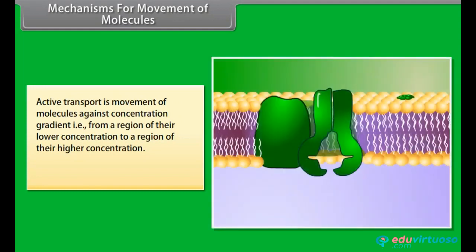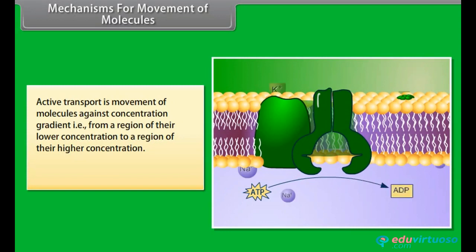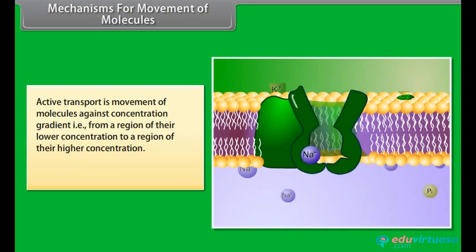No energy is spent during diffusion or osmosis. Active transport is the movement of molecules against a concentration gradient, i.e., from a region of lower concentration to a region of higher concentration.